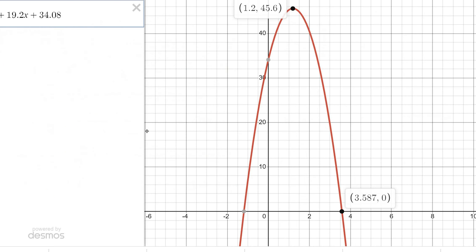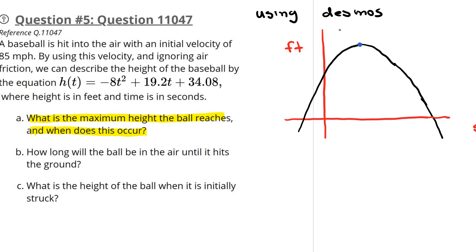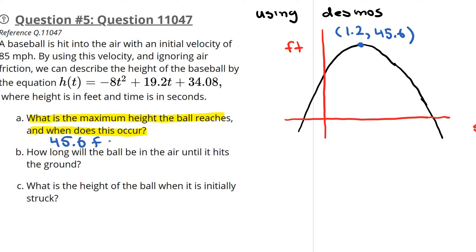From Desmos, the vertex is (1.2, 45.6). So the maximum height is 45.6 feet, and it occurs after 1.2 seconds when the baseball is up in the air.